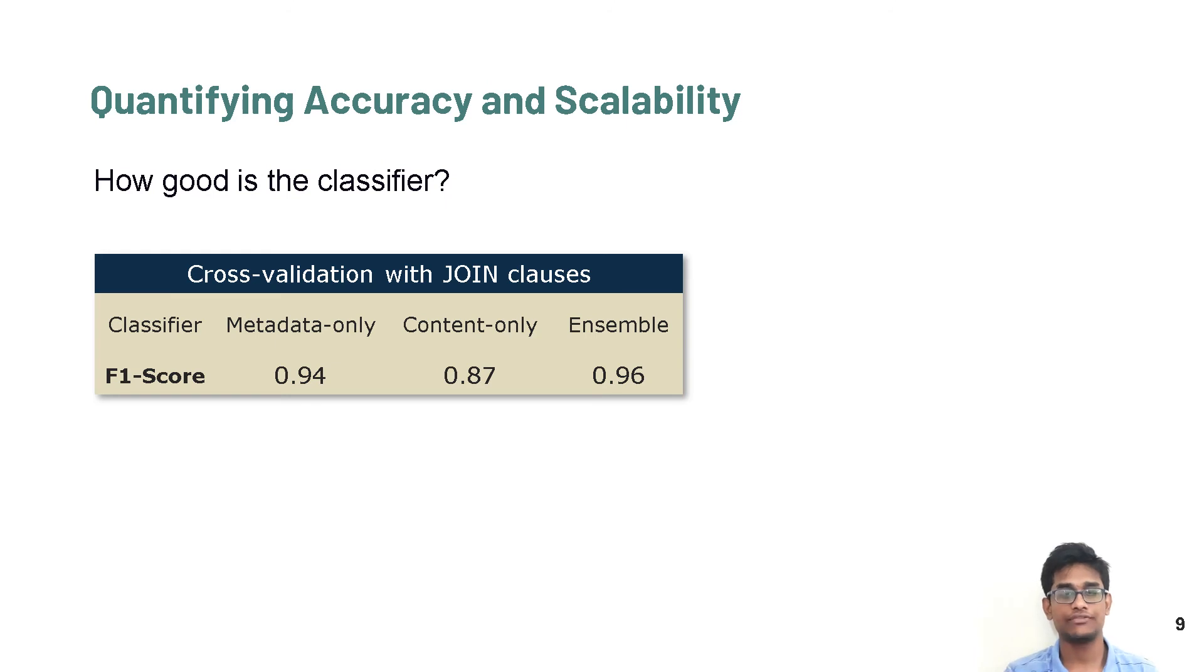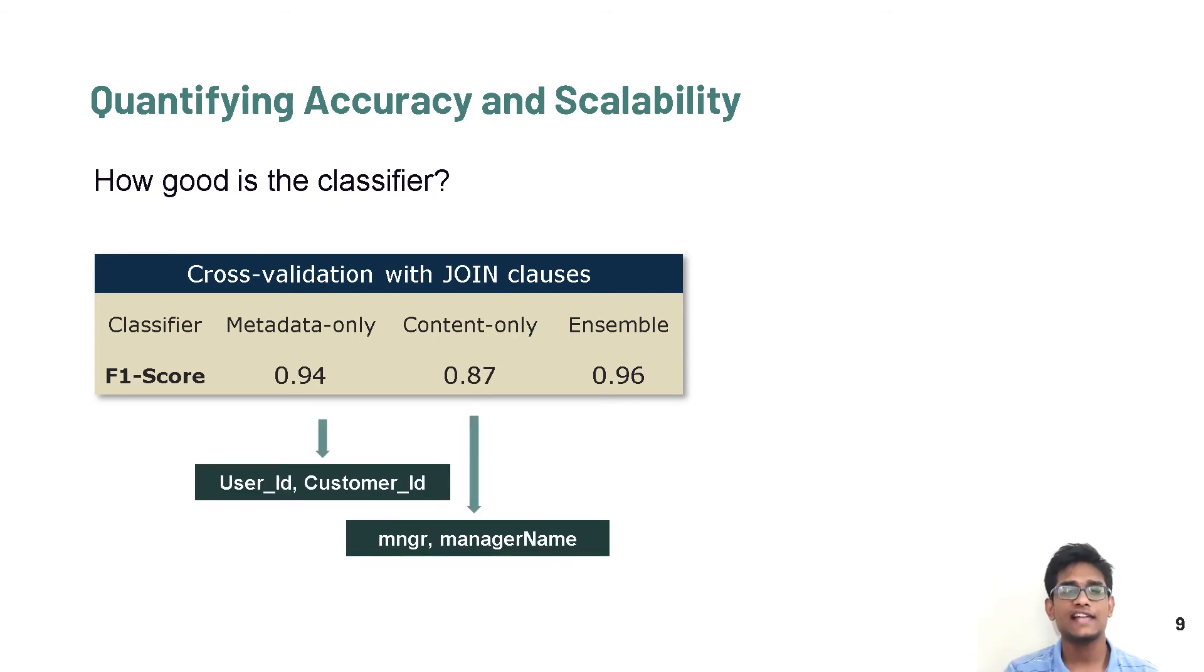We train three classifiers to see the advantages of these features. A metadata-only model gives an F1 score of 0.94, a model based on only content features has an F1 score of 0.87, and an ensemble of metadata models for numerical column pairs, and all features models for textual column pairs has an F1 score of 0.96 on the ground root. A pair user ID and customer ID has lower content-based features like jacquard due to fewer intersection in the samples, but it has a high column name similarity because of the tokens user and customer.